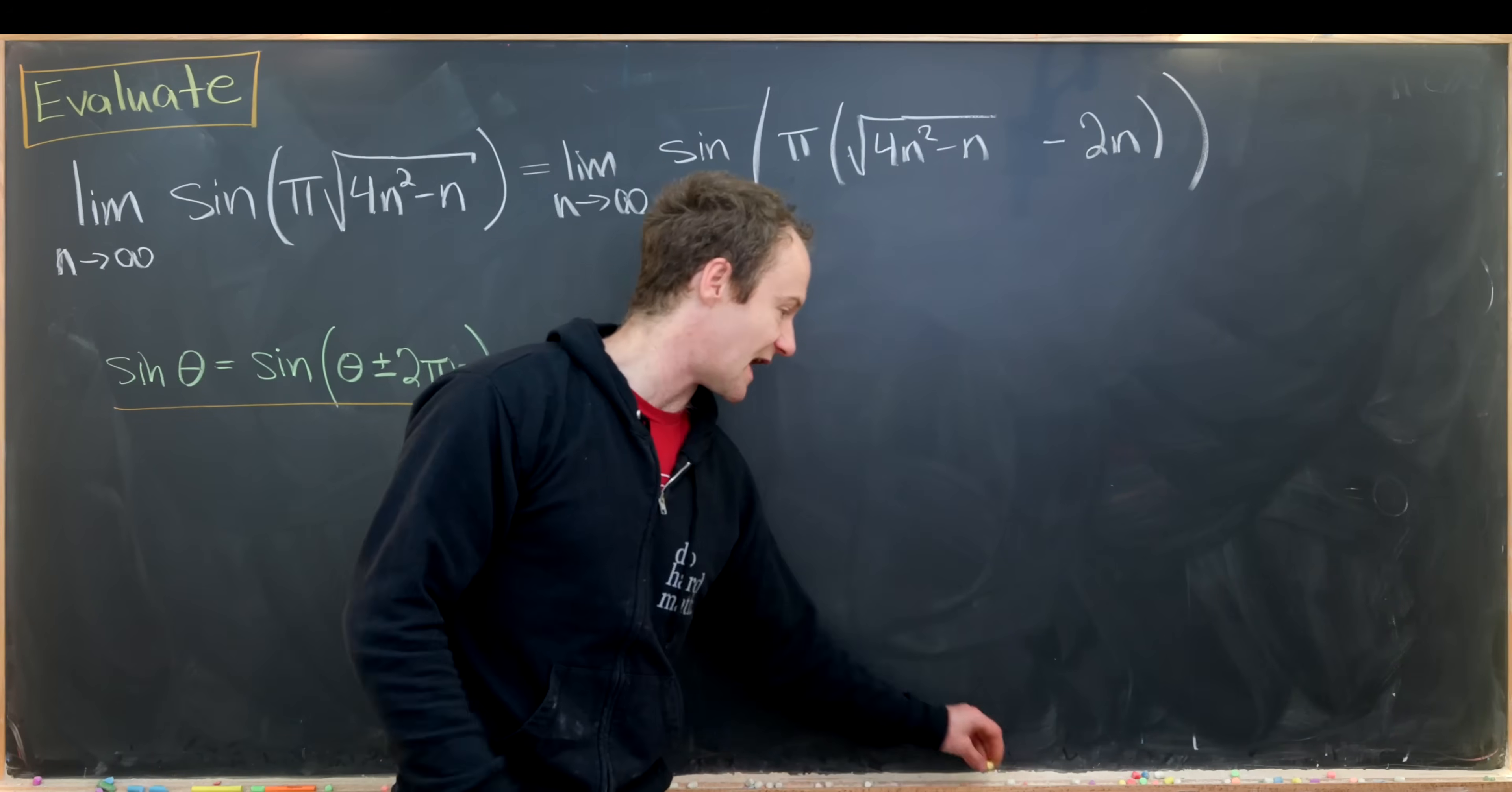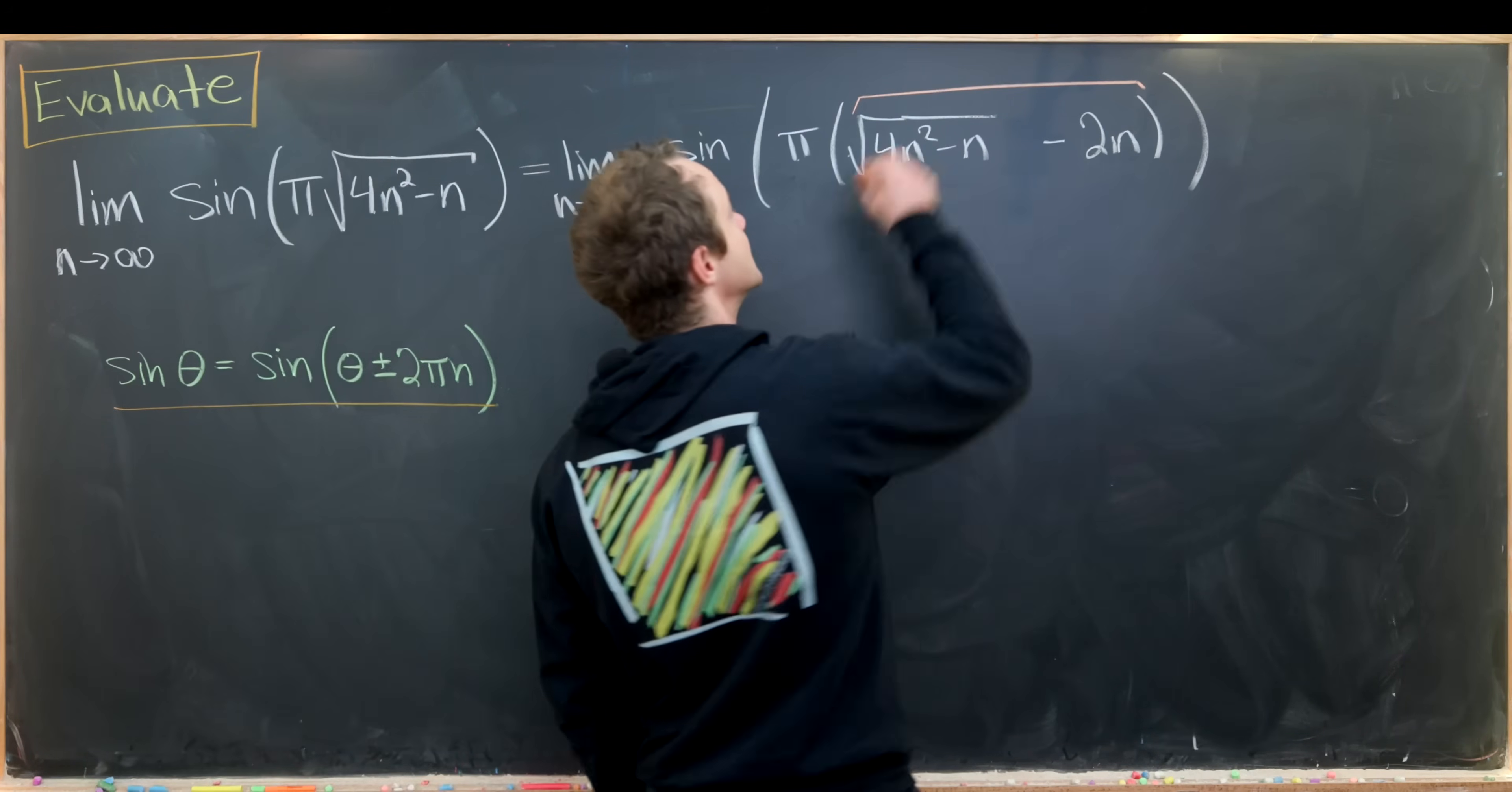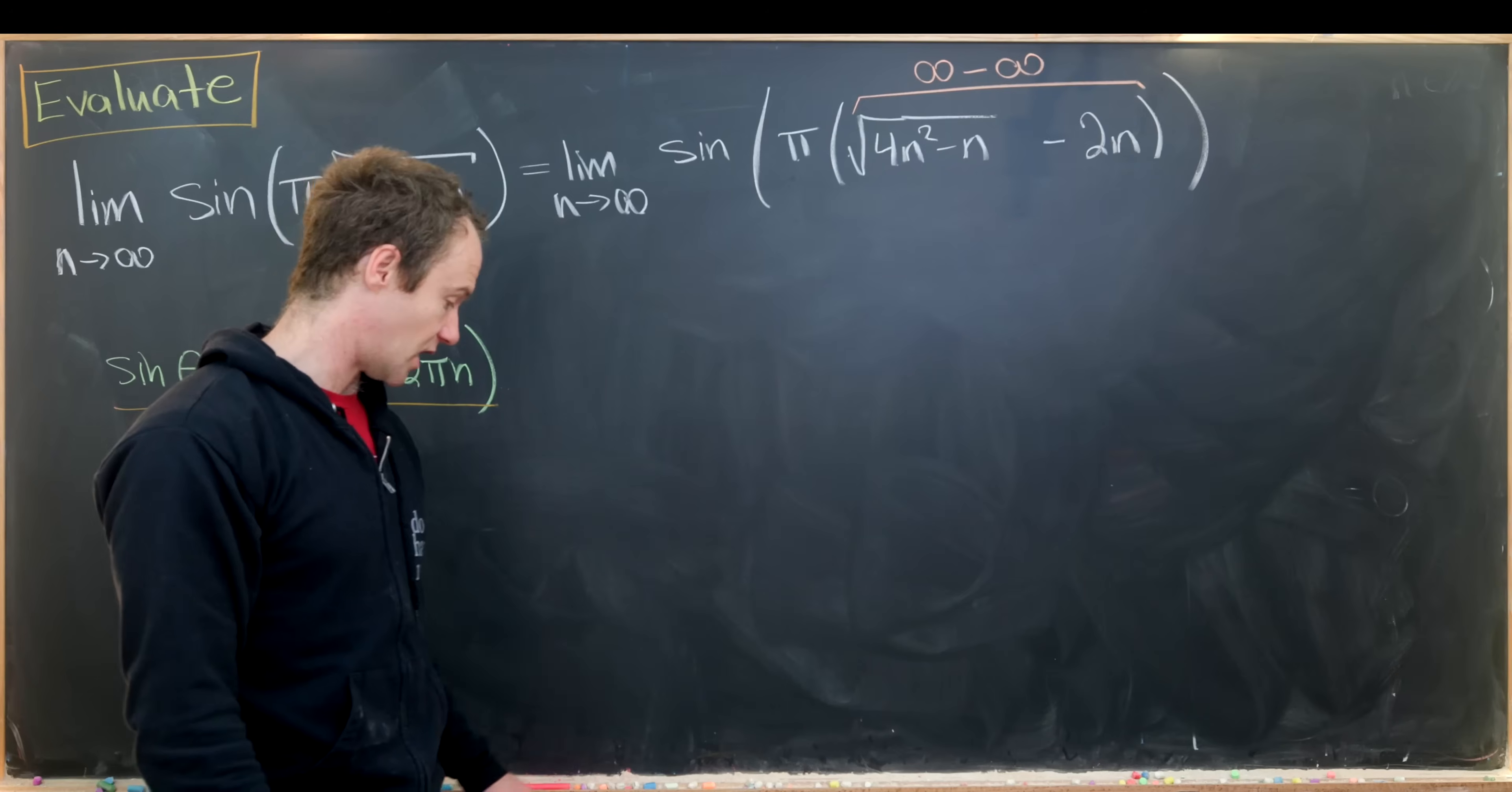But now let's notice that I have achieved something where the argument is an indeterminate form instead of the argument approaching infinity. And indeterminate forms possibly have finite limits. So this is an indeterminate form. It's type infinity minus infinity. We could approach this a couple of different ways. Maybe the best way to do it would be to rewrite this using the radical conjugate.